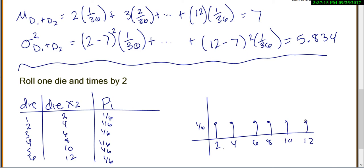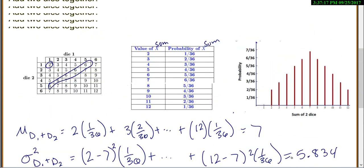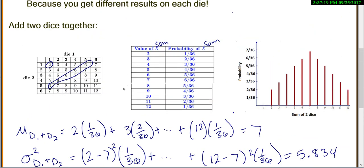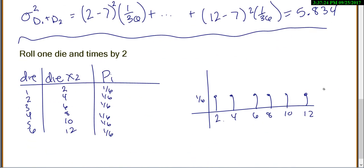So notice, this is a very different situation from what we have before. We have different possible values, we have different probabilities, and we have different graphs. So it's a very, very different situation. Even though it might seem similar, add two dice or times one die by two, you get different possibilities with different probabilities.